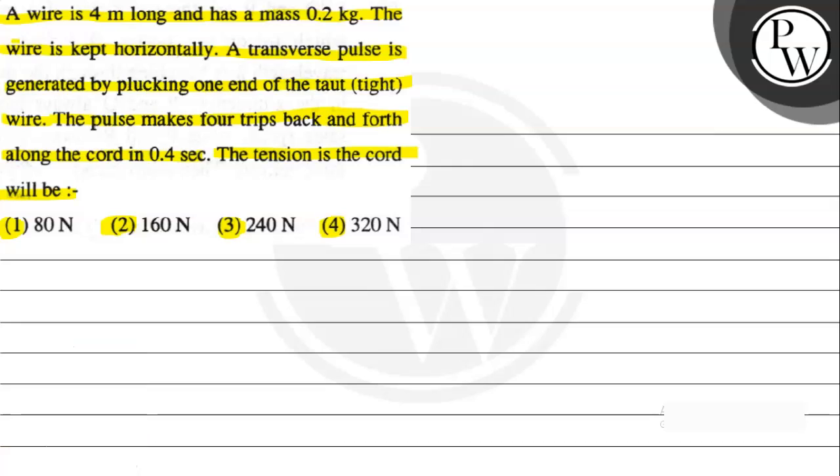To understand the question, whenever a wave is set in the wire or string, its velocity is given by the expression v = √(T/μ), where T is tension in the string, μ is linear density (mass per unit length), and v is the velocity or speed of the pulse.